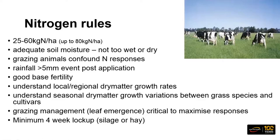We need good base fertility to get that dry matter response to nitrogen. Understand our local and regional dry matter growth rates, and understand seasonal dry matter variation between species and cultivars — knowing what you're growing, how it grows, and how much it can grow. If we're grazing, really get that leaf emergence under control. Coming into spring, we're looking at canopy closure, but in late winter we want to be around the two-and-a-half to three-leaf stage with ryegrass to maximise dry matter response to nitrogen.